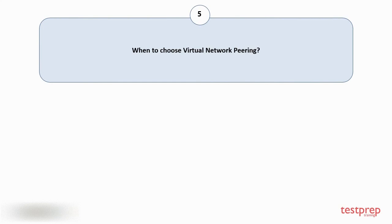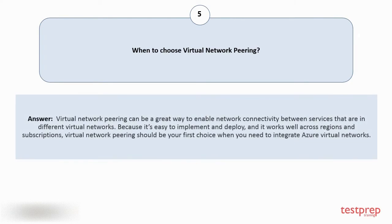Question number five: when to choose virtual network peering? Your answer is: virtual network peering can be a great way to enable network connectivity between services that are in different virtual networks. Because it's easy to implement and deploy, and it works well across regions and subscriptions, virtual network peering should be your first choice when you need to integrate Azure virtual networks.